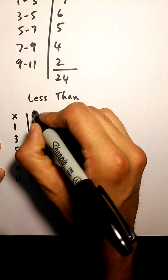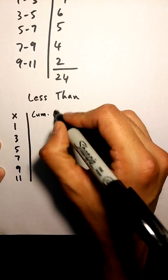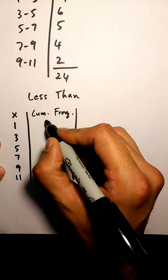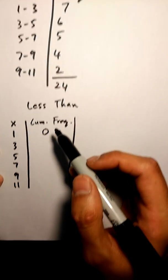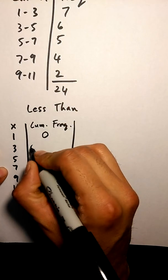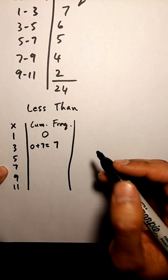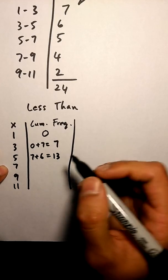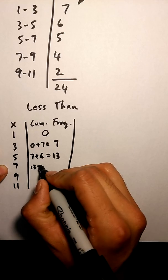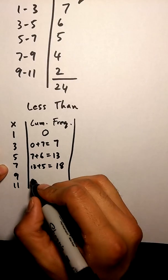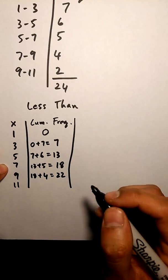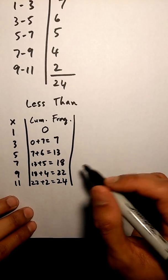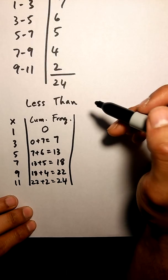The next column that I'm going to have is my cumulative frequency. In this case, it always starts off at 0, and I constantly add numbers from my frequency table. So 0 plus 7 equals 7. The next one will be 7 plus 6, which is 13. The next one is 13 plus 5, which is 18. The next one is 18 plus 4, which is 22. The last one is 22 plus 2, which is 24. My ending number here should always be my total of my frequency table as well.